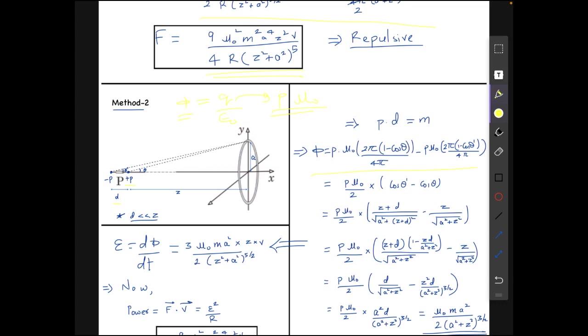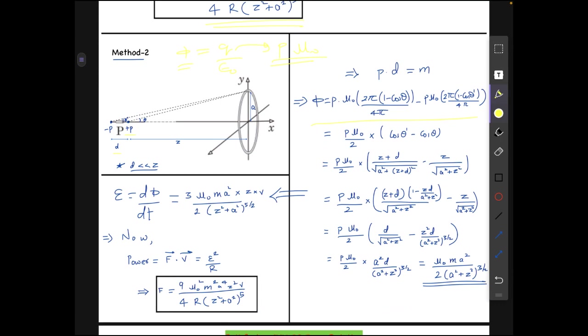On solving this and making the use of appropriate approximations we solve this. Finally we get that the flux equals to mu not times ma square over 2 times a square plus z square to the power 3 by 2. This is the same as we got earlier and now differentiating this we get the emf.